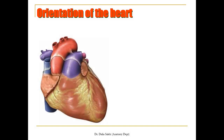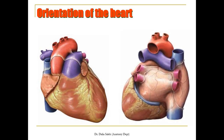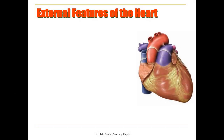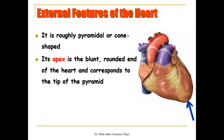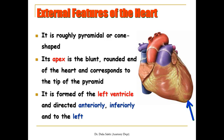Looking from the front, you see mostly the ventricles — especially the right ventricle — because the heart rotates upon itself in a clockwise direction. Looking from the back, we can see mainly the left atrium, and to its right lies part of the right atrium. Regarding external features, the heart is roughly pyramid- or cone-shaped. Its apex is the blunt rounded end, corresponding to the tip of the pyramid, formed mainly by the left ventricle and directed anteriorly, inferiorly, and to the left.